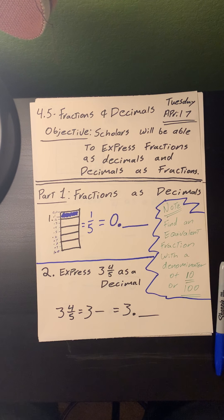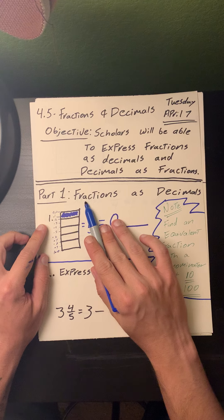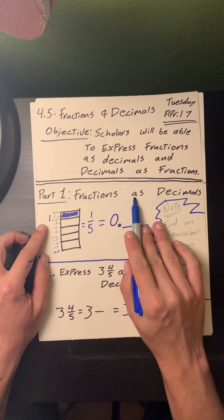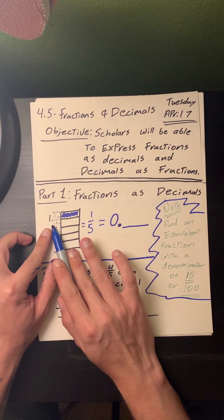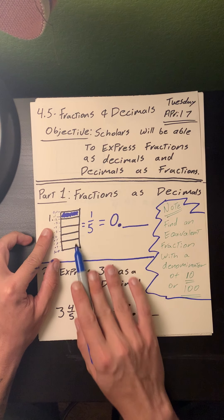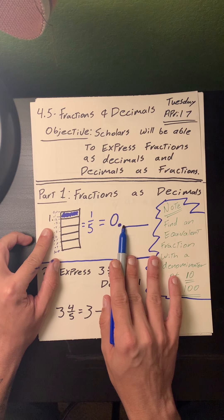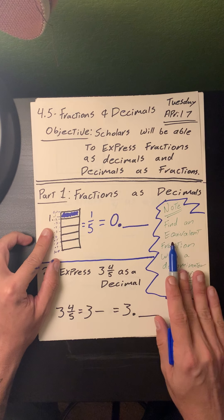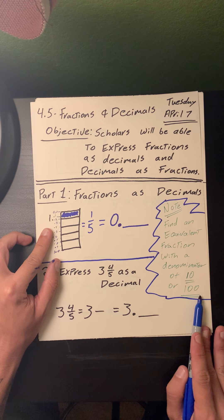There are three parts to today's lesson. Part 1: we're going to be converting our fractions into decimals. The first problem we have is to convert one-fifth into a decimal. Note: we need to find an equivalent fraction with a denominator of 10 or 100.